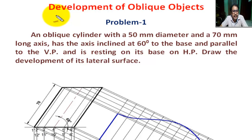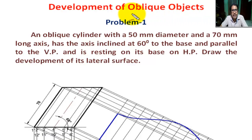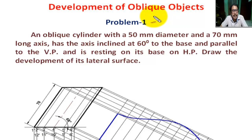Hello students, today we are going to solve a problem on development of oblique objects. Oblique objects means oblique cylinder, oblique cone, oblique prism, oblique pyramid, etc.